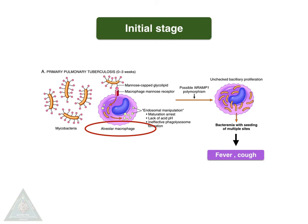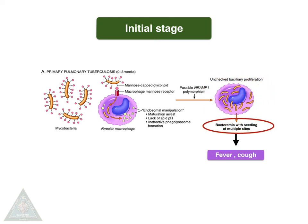In the initial stage of primary tuberculosis, with less than 3 weeks of infection, the alveolar macrophages present in the lung will kill the organism — that is mycobacteria. When bacillary proliferation is more and unchecked by the alveolar macrophages, it will enter the bloodstream causing bacteremia, with seeding of multiple sites, causing clinical features like fever, cough, and hemoptysis.